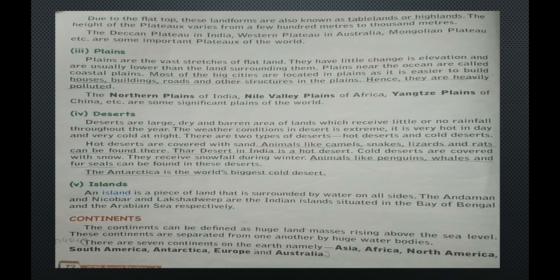Cold deserts are covered with snow and receive snowfall during winter. Animals like penguins, whales and fur seals can be found in these deserts. Antarctica is the world's biggest cold desert. An island is a piece of land that is surrounded by water on all sides. The Andaman and Nicobar Islands and Lakshadweep are Indian islands situated in the Bay of Bengal and the Arabian Sea respectively.